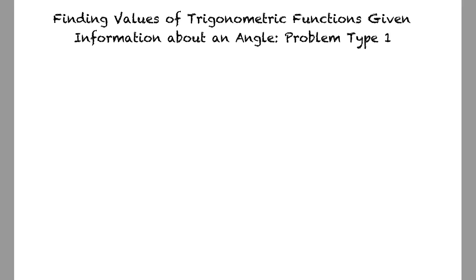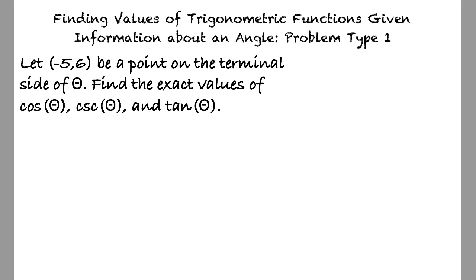For example, if we let (-5, 6) be a point on the terminal side of θ, find the exact values of cos(θ), csc(θ), and tan(θ). I think I understand the goal of this topic, but how can we find the terminal side of θ if (-5, 6) is not a point on the unit circle?